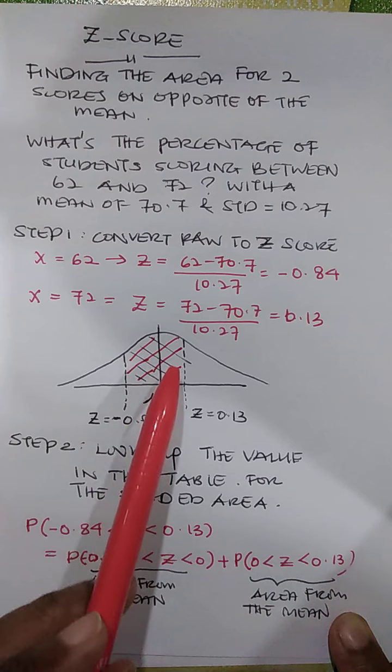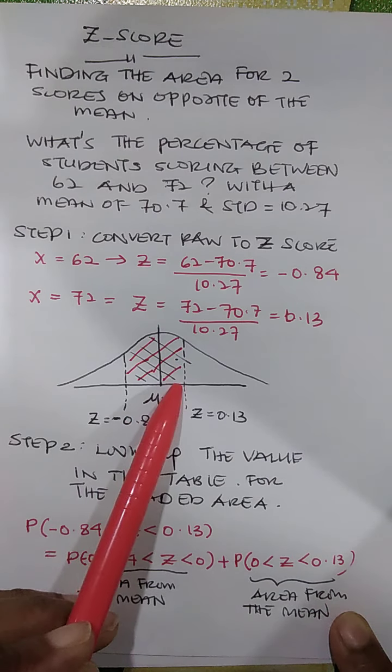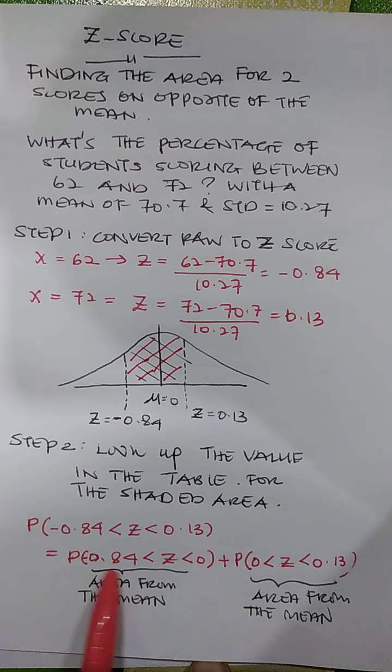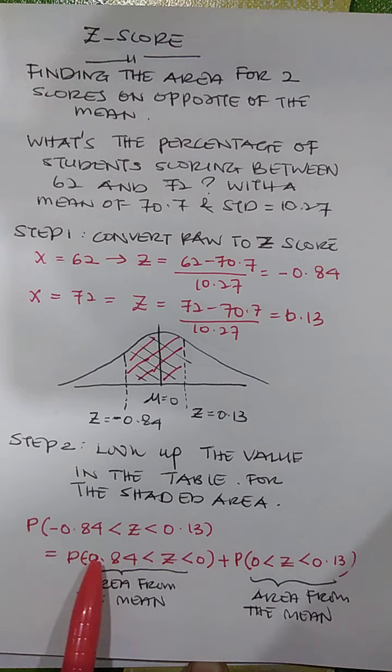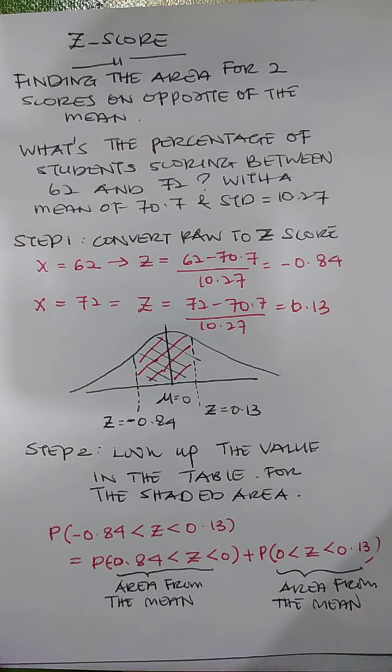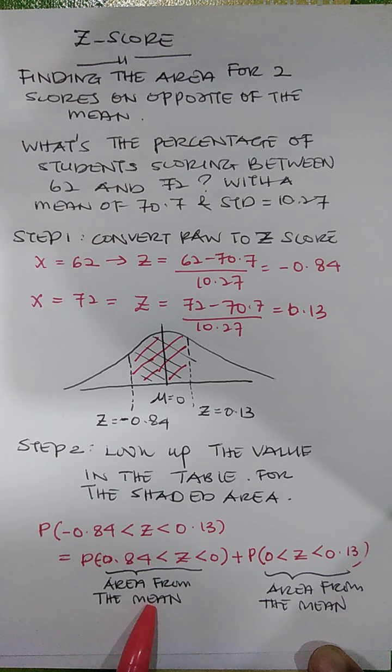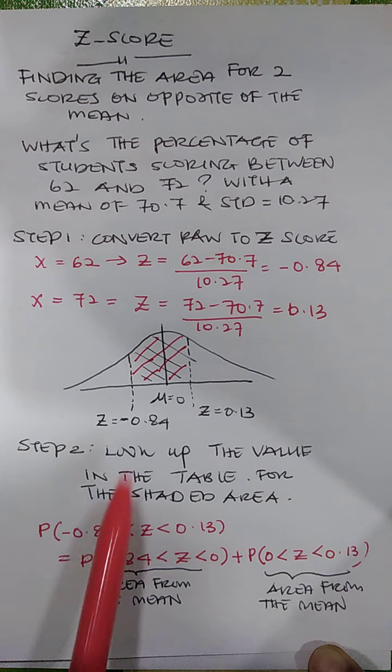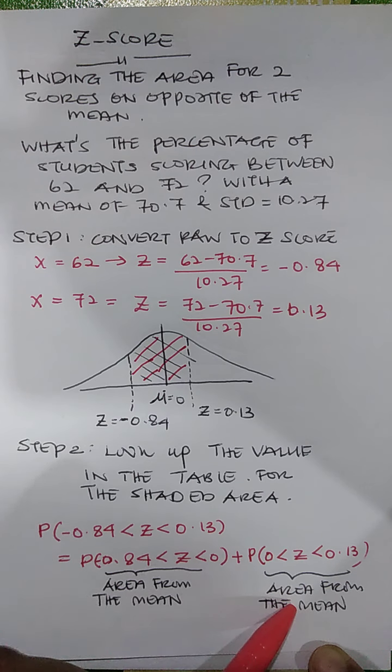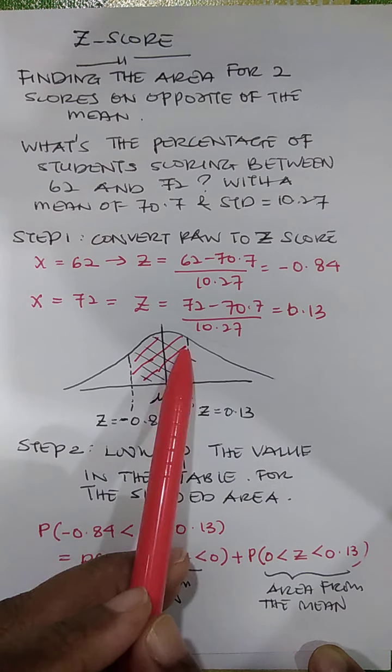So once you get these two, these shaded and this shaded second section, you can add them all up. So the proportion or the probability area between, for area negative 0.84 to 0 is area from the mean. Area from the mean. Then you can get it from the table. And you can add the value from 0 to 0.13.